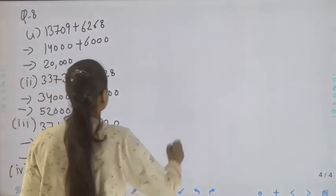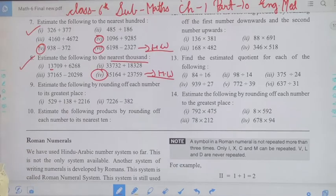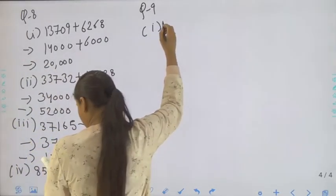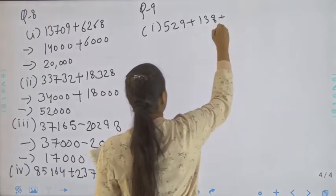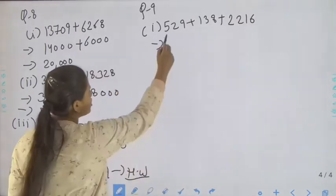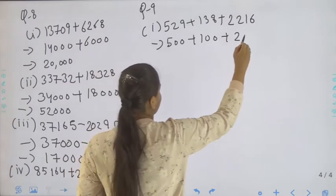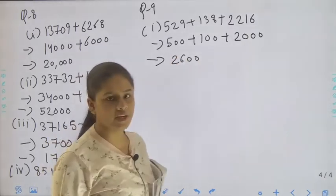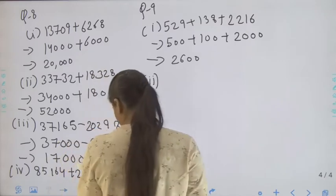Question number nine: estimate the following by rounding off each number to its greatest place. First part: 529 plus 138 plus 2260. So 529 will round off to 500, 138 will round off to 100, and 2260 will round off to 2000. Total: 2000 plus 500 plus 100 it will be 2600.